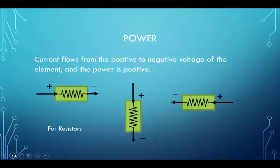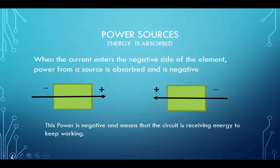With these resistors, current flows from the positive to the negative side for all three elements. For power sources, energy is absorbed. In these cases, the current flow actually enters the negative side of the element, meaning that a power source provides energy and the circuit absorbs the energy.